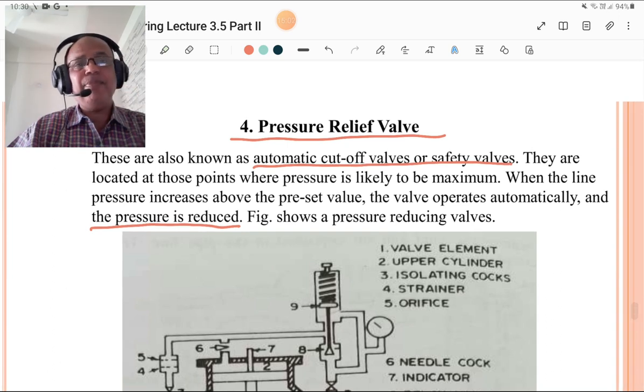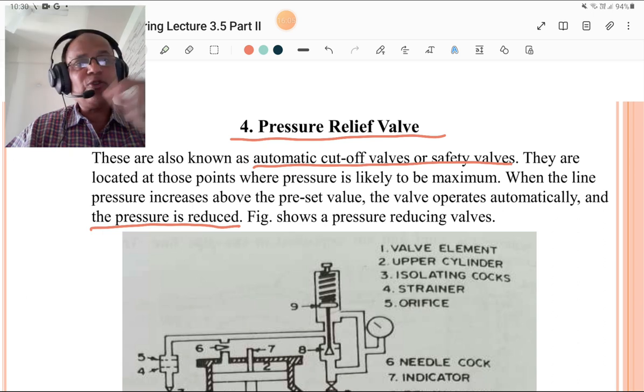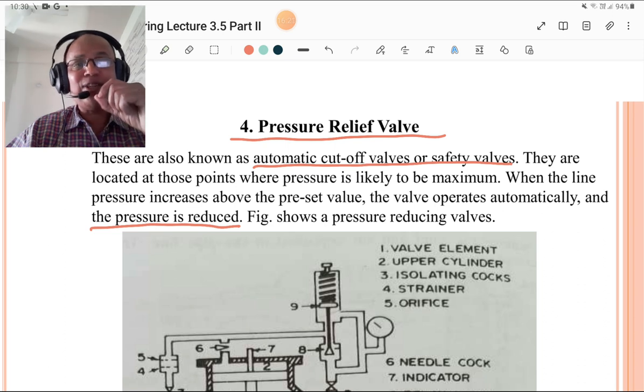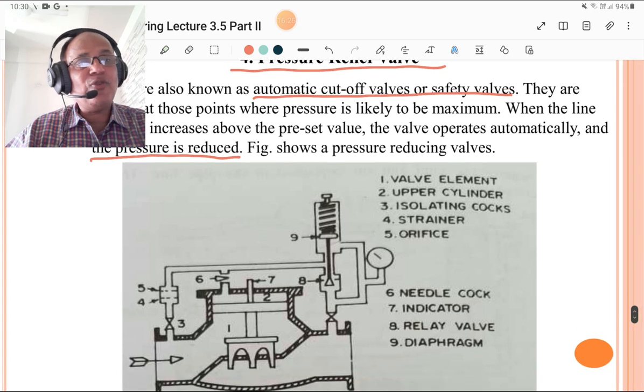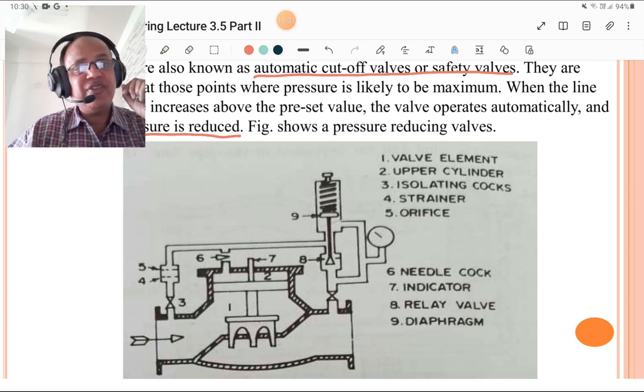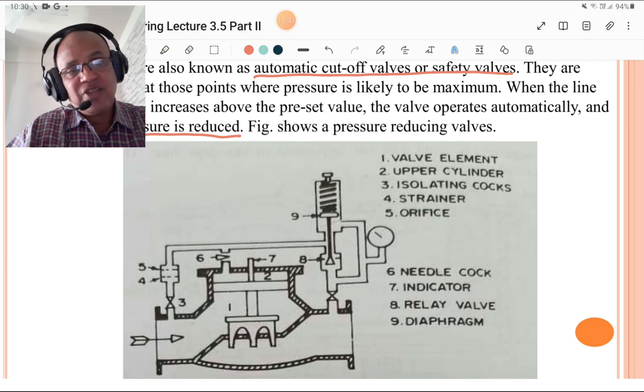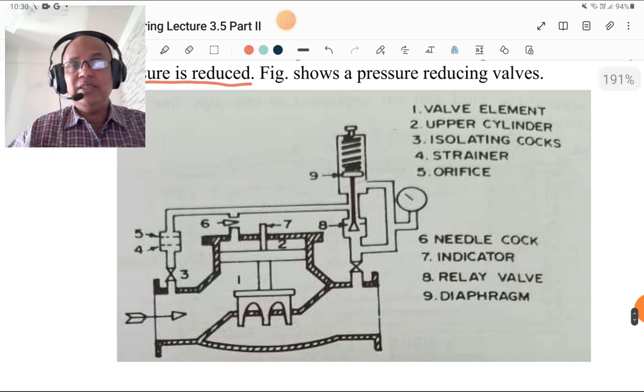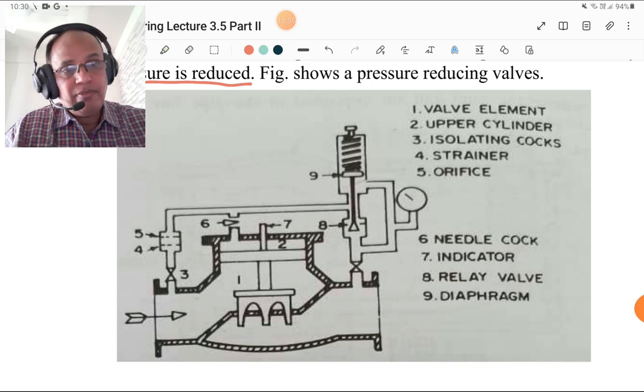We are going to discuss the pressure relief valve. Name itself indicates it is used to relieve the pressure. This is also termed as automatic cut-off valves or safety valves. They are located at such a point where pressure is likely to be maximum. When the line pressure increases above the preset value, the valve operates automatically and the pressure is reduced. So it is used to reduce the pressure or relieve the pressure. This figure shows the pressure reducing valve. It contains the valve element, upper cylinder, isolating cock, strainer or filter, needle cock, indicator, relay valve, diaphragm, etc. Please study that figure very carefully. Sometimes question may be asked in examination to describe the pressure relief valve and draw a schematic diagram of pressure relief valve. You must know these nine important features of that pressure relief valve.